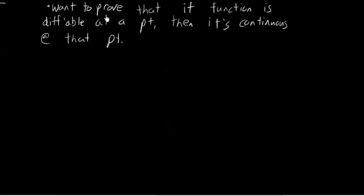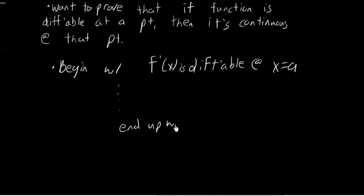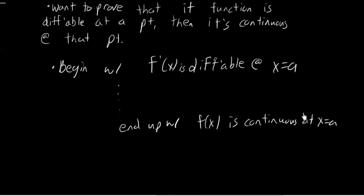We want to prove that if a function is differentiable at a point, then it is continuous at that point. In particular, we want to start with the assumption that f(x) is differentiable at x = a, do some work, and ultimately end up with the fact that f(x) is continuous at x = a. So we want to end up with a continuity-at-a statement.